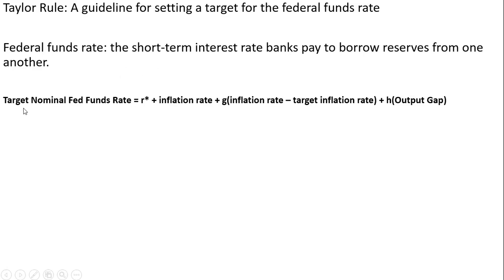Here is the Taylor Rule. It states that the targeted nominal federal funds rate equals R-star plus the inflation rate plus G times the inflation rate minus the target inflation rate, plus H times the output gap.